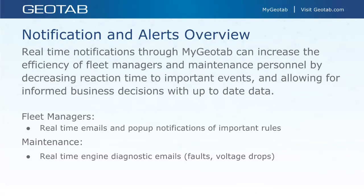My word of advice for using these notifications and alerts is to exercise a little bit of caution when setting these up. You don't want to get an email every time someone is breaking the speed limit — you could get 500 emails a day. Some things are better suited as a daily or weekly report, a driver scorecard, or exceptions report. Think of notifications and alerts as that upper level of priority — things that you want to be notified of immediately, like a check engine light or a battery voltage level.